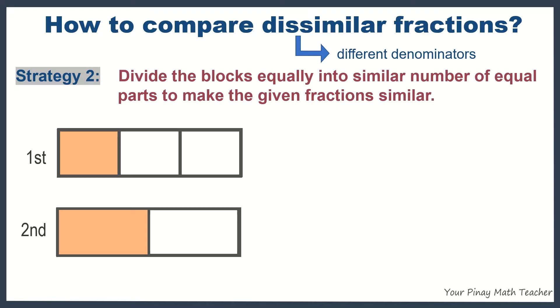Strategy 2: If the fractions are dissimilar, divide the blocks equally into similar number of equal parts to make the given fractions similar.